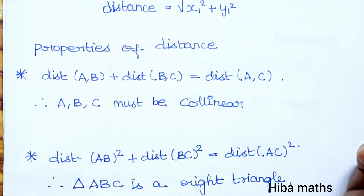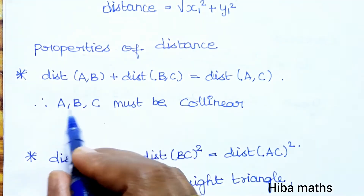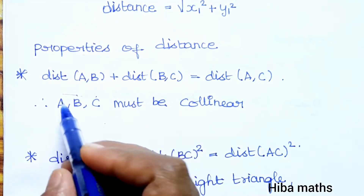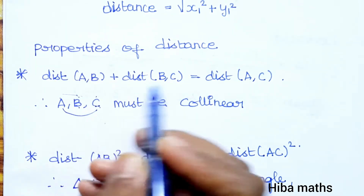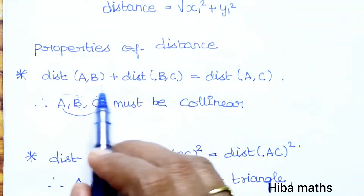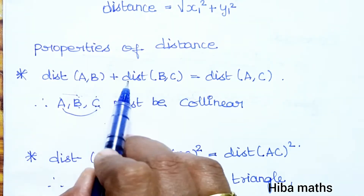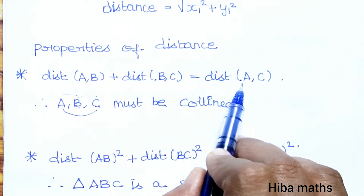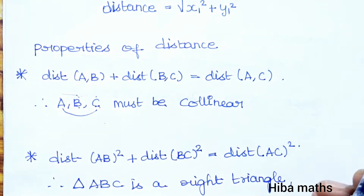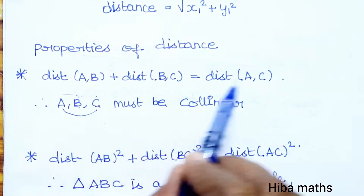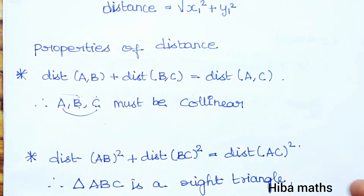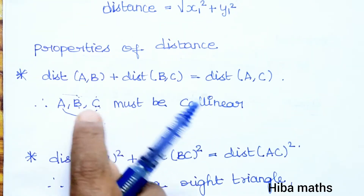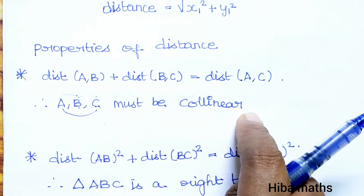To find whether points are collinear or not, we check if the sum of two sides equals the third side. So we have to find distances AB, AC, and BC, and if we add two sides it will be equal to the third side.